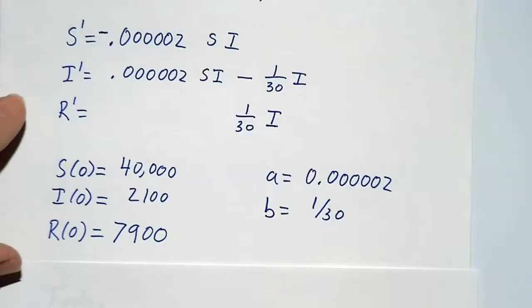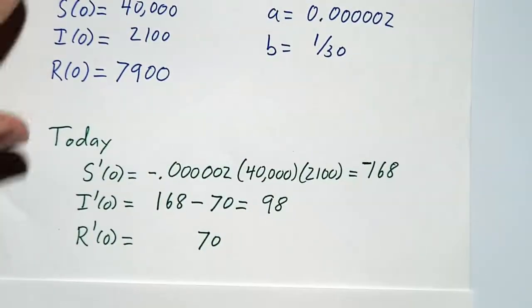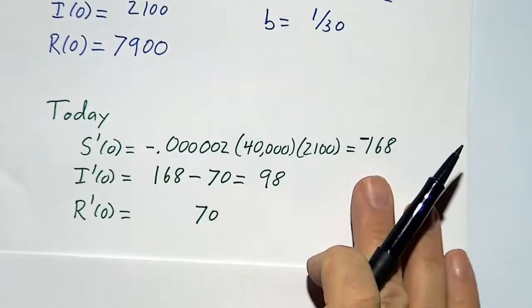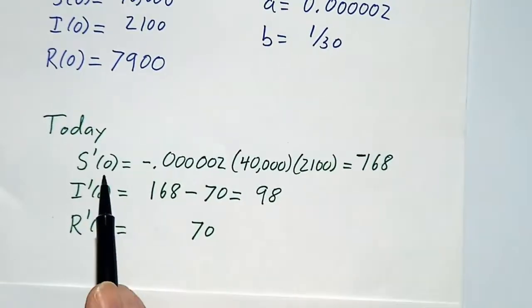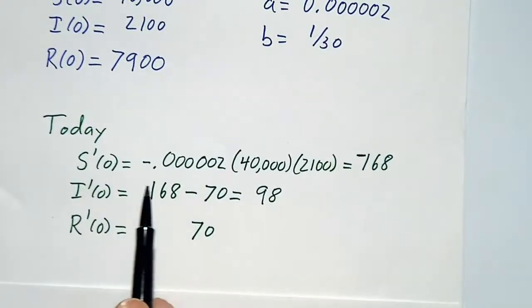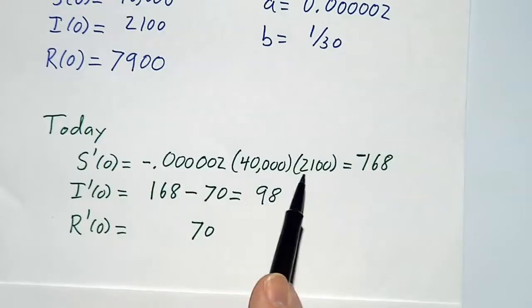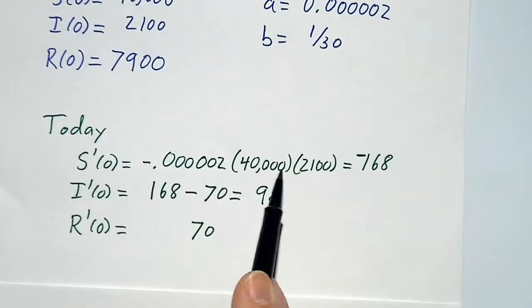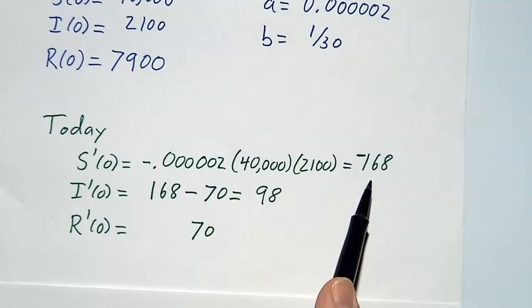And the answer is to do things one day at a time. So today, you can figure out how fast things are changing. The rate at which S is changing is minus aSI. So minus aSI works out to negative 168.